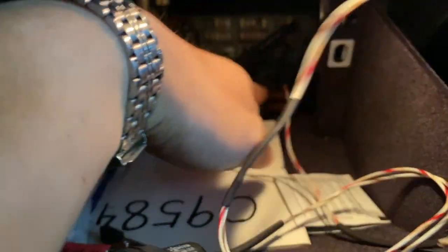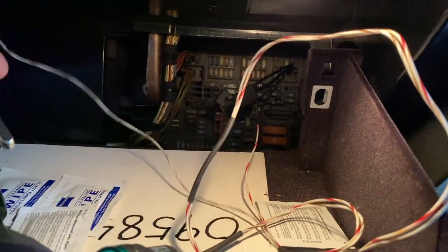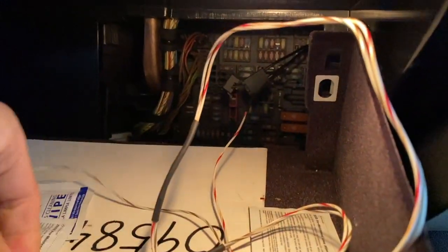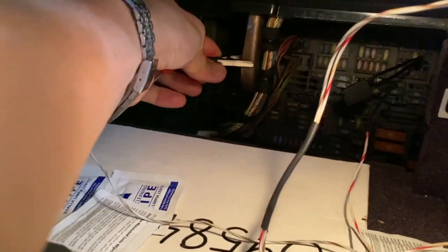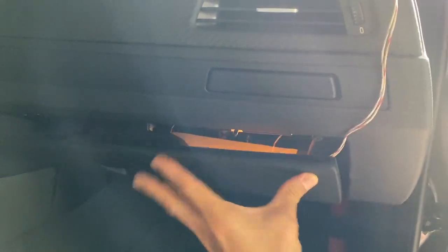Now let's take the power indicator into action. The probe end is tapped to the fuse slot we are interested in. And let's ground the indicator to the dashboard frame with the alligator clip. The indicator lights up, showing there is power on this fuse slot. Place the indicator on the dashboard, close the glove box.